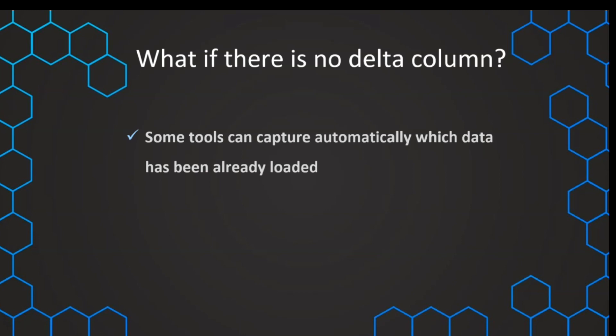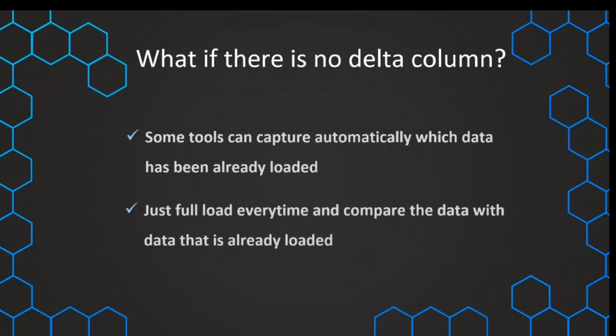Usually though, that is not the case. This situation — where no delta column is available — can typically occur for dimension tables where we don't have a timestamp. In that case, we can do a full load every time our ETL process runs, and then we just compare the new data with the already loaded data to check if there are any changes or any additional columns. This is typically not the case for fact tables, where we usually do have a timestamp, but for dimension tables.